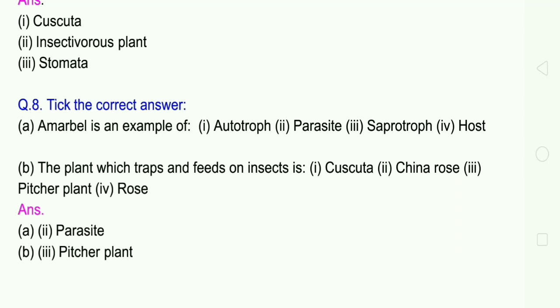B: A plant which traps and feeds on insects. 1 Cuscuta, 2 China rose, 3 Pitcher plant, 4 Rose. The plant is called insectivorous plant. Answer: Pitcher plant.